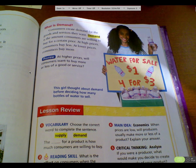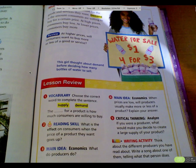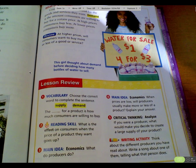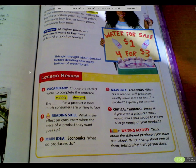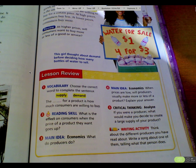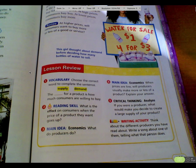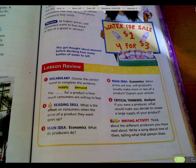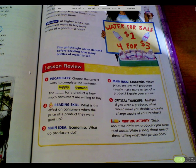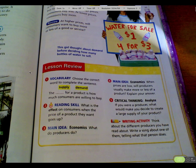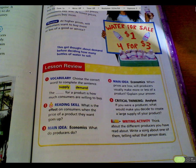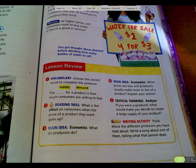Vocabulary: choose the correct word — supply or demand. The blank for a product is how much consumers are willing to buy. Reading skill: what is the effect on consumers when the price of a product goes up? Economics: what do producers do? Main idea: when prices are low, will producers usually make more or less of a product? Explain your answer. Critical thinking: if you were a producer, what would make you decide to create a large supply of your product?